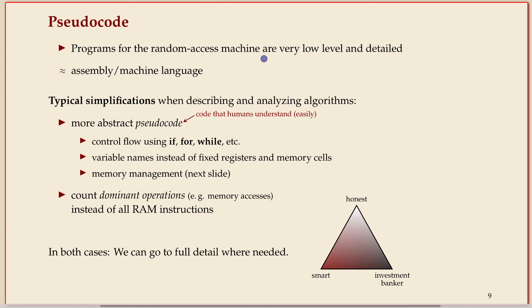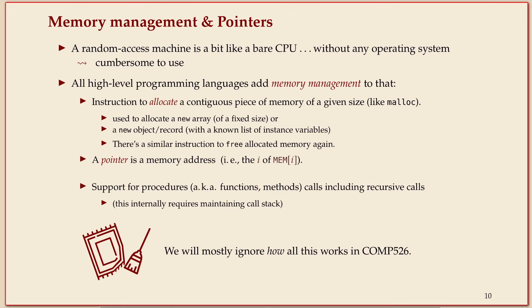We'll usually allow ourselves to be more convenient for human readers. We use the usual type of control flow constructions as you would use them in Python. We allow ourselves to use variable names instead of just indices of registers and so on. Last important bit: we'll count dominant operations, so we'll fix some more abstract things to count instead of all primitive operations. That's often sufficient.